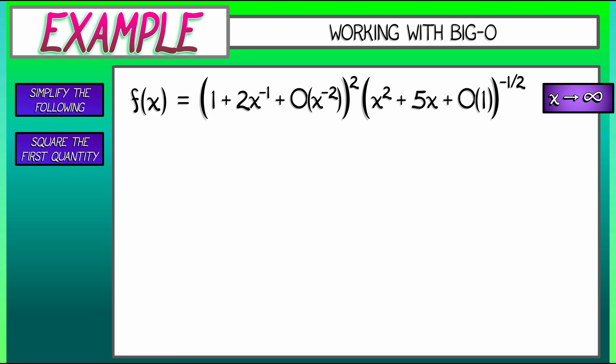So let's first of all square that first quantity on the left. So let's see, I get 1 squared is 1, and then twice 1 times 2x to the minus 1, that's 4x to the minus 1, and then all the other terms fit into a Big-O of x to the minus 2.